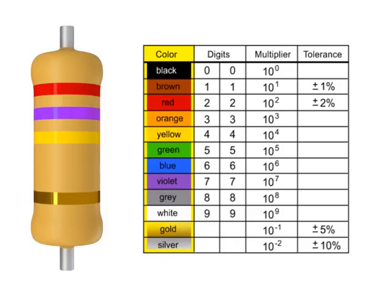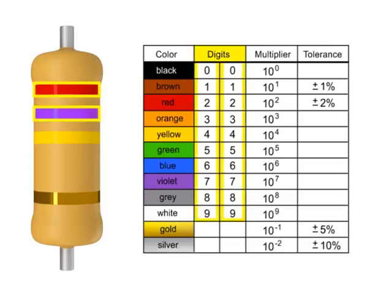Memorizing this color chart will enable you to become proficient at quickly decoding and using resistors. In a 4-band resistor, the first two bands represent the digits or significant figures.